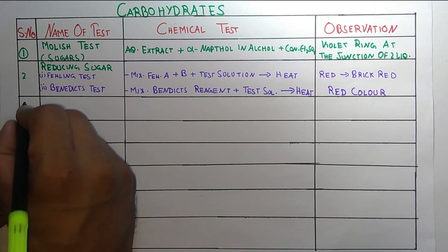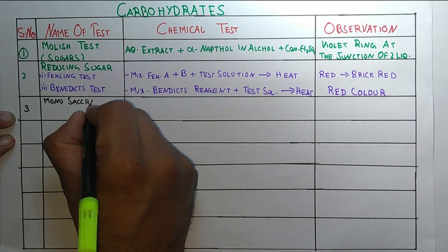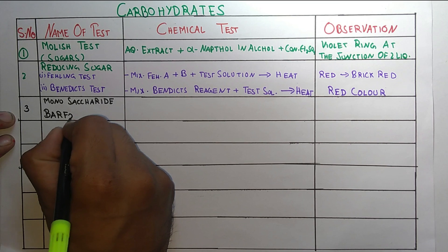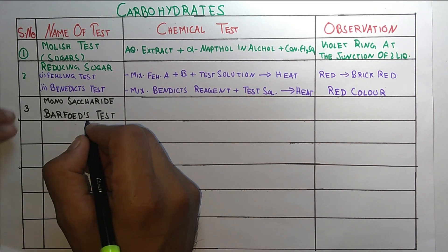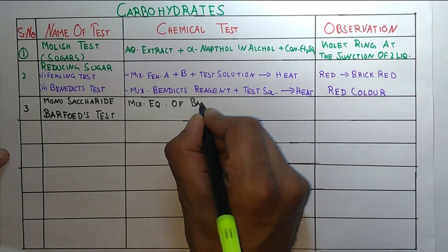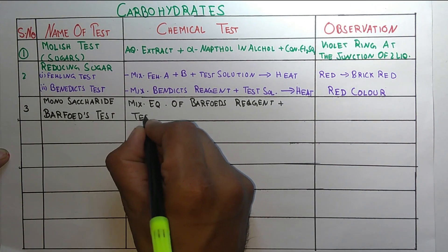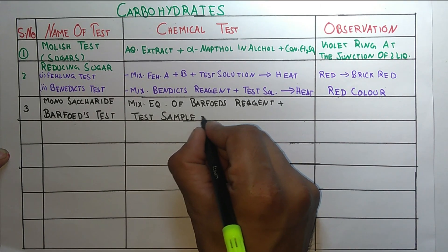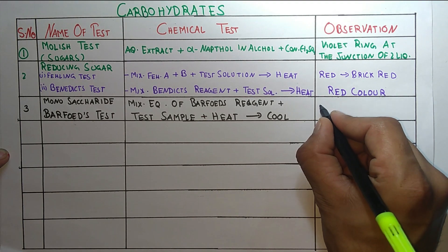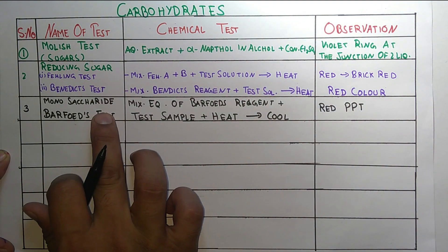The third test is for monosaccharides, and the test used is Barfoed's test. The procedure is: mix equal volumes of Barfoed's reagent plus the test sample, then heat, and finally cool it. The observation is the formation of a red precipitate.